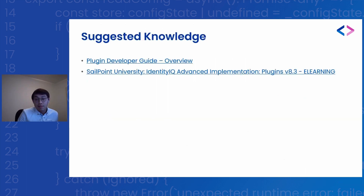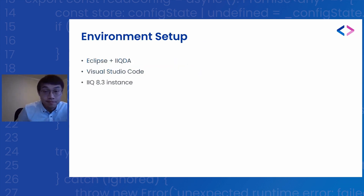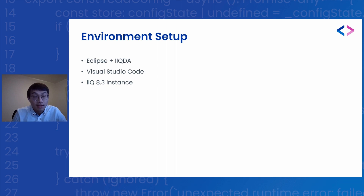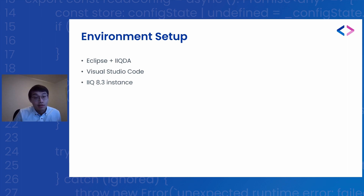IDE setup. Before we start, I would strongly suggest developers have some extended knowledge in IAQ plugin development. Here are the list of resources as a starting point for your journey. For the environment setup, I'm mainly using Eclipse plus the IAQ DA, mainly for plugin project creation. In this practice there is actually no backend Java implementation, but I'm still using Eclipse and IAQ DA for the plugin project creation. I'm mainly using VS Code for the JavaScript development. An IAQ instance is required for testing — I will be using an IAQ 8.3 instance as a demo server later in the presentation.